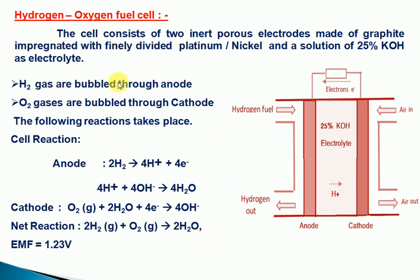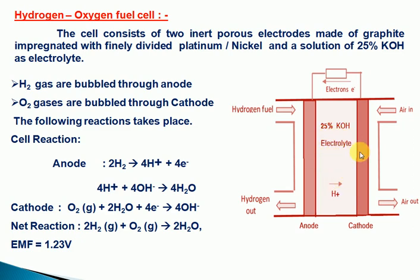The hydrogen oxygen fuel cell construction: there are 2 electrodes — anode and cathode. The catalyst, platinum or nickel, is added while manufacturing the electrode, which makes the electrode a bit costly. 25% potassium hydroxide is used as the electrolyte.